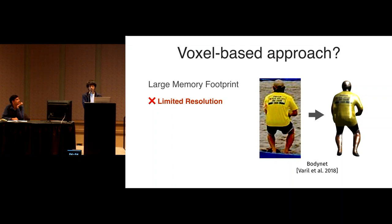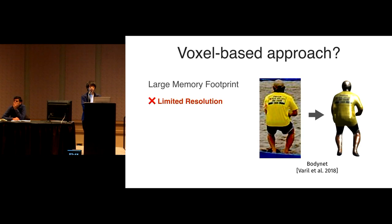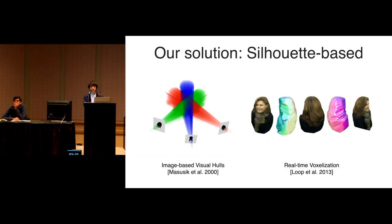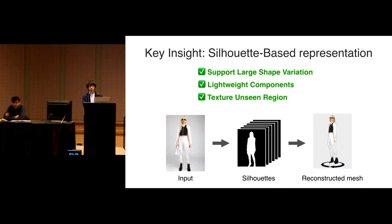Voxels are a common 3D representation but are not ideal for clothed human reconstruction due to large memory footprint. Inspired by the traditional computer graphics technique of visual hull, we propose a clothed human digitization pipeline where 3D shapes are implicitly represented by a set of silhouettes. Our silhouette-based representation supports large shape variation, keeps pipeline components lightweight, and includes texture synthesis for fully textured meshes.